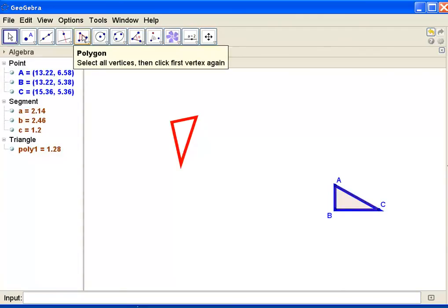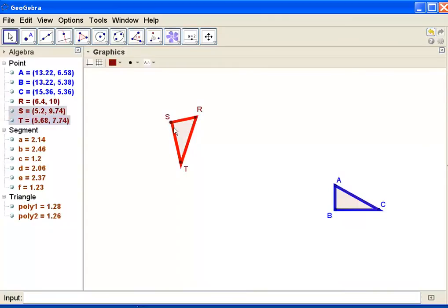I'm also going to label the red triangle. This is triangle RST.